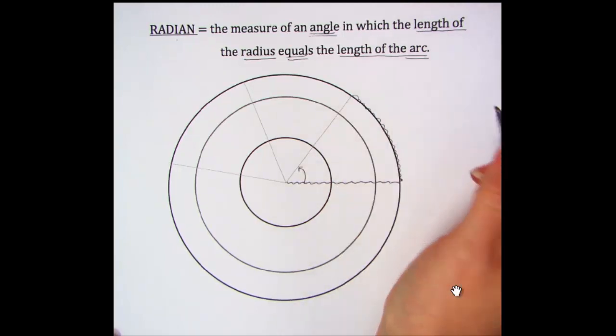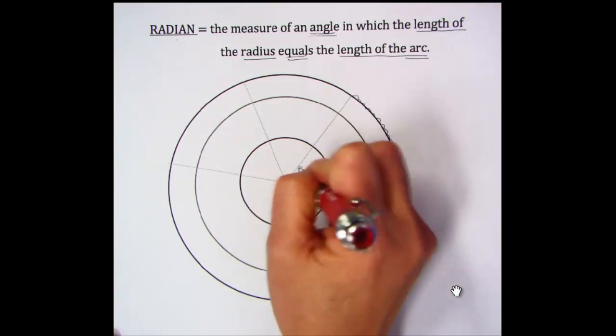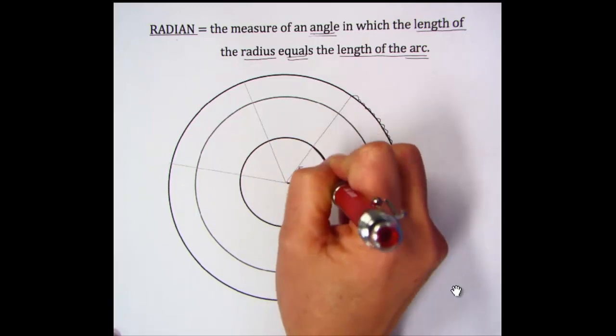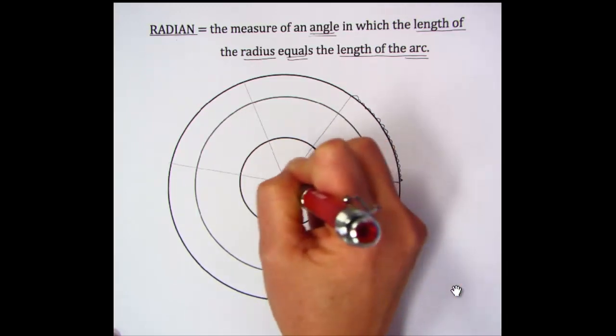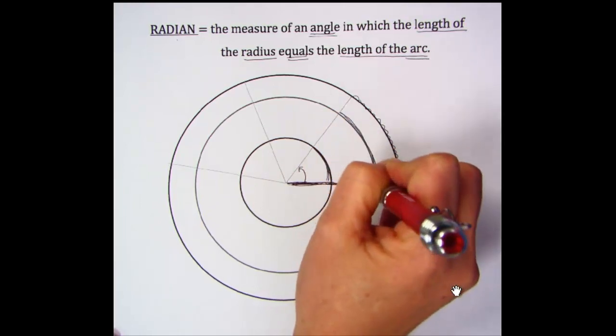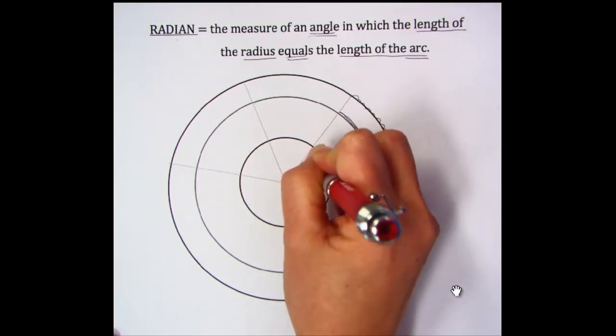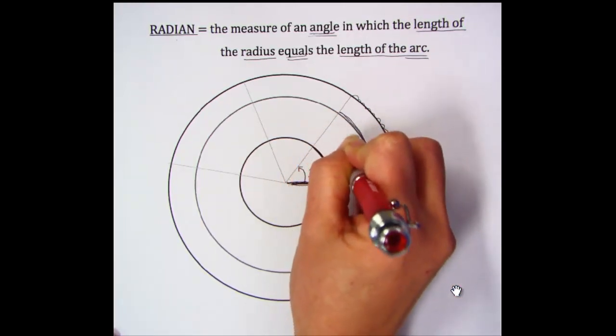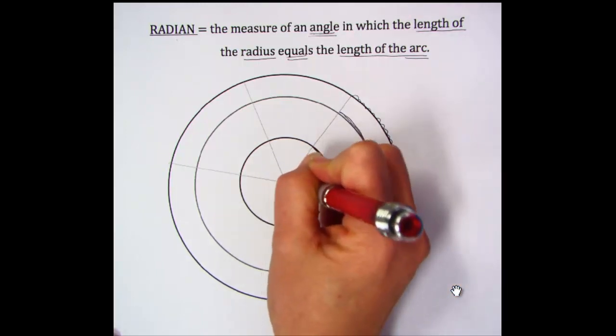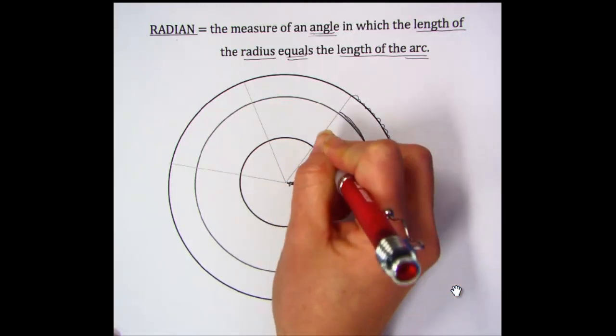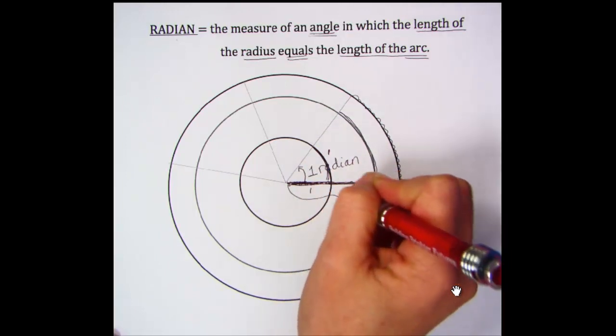And there's an arc. In that angle I just highlighted, it's the same angle whether I look at the little inside circle, the middle circle, or the outside circle. The angle measure is the same, and it's one radian, because the measure of each radius of each circle equals the measure of the arc.